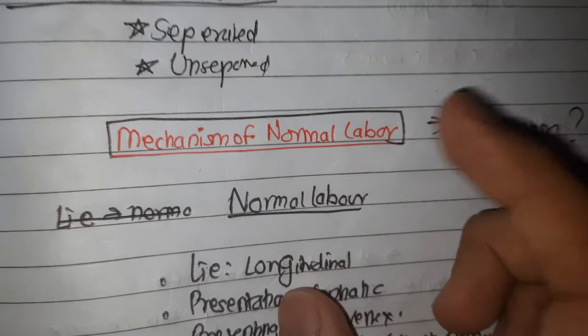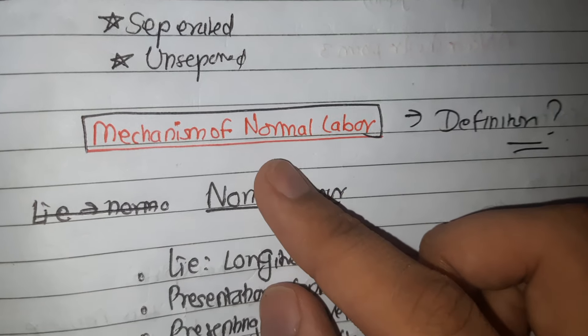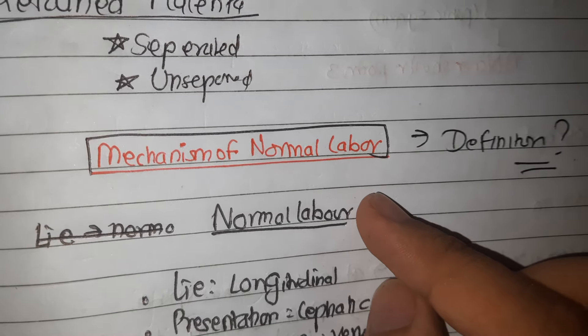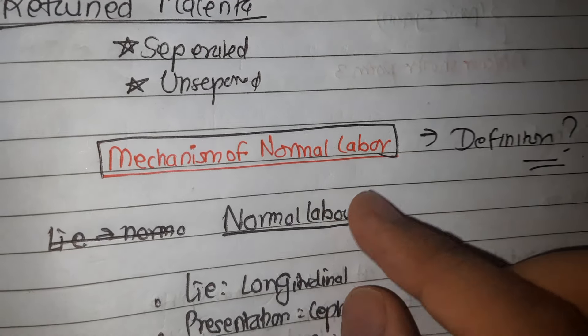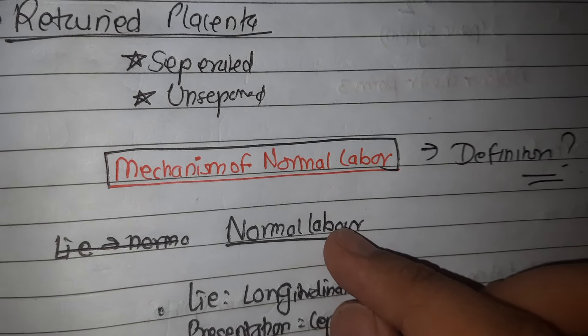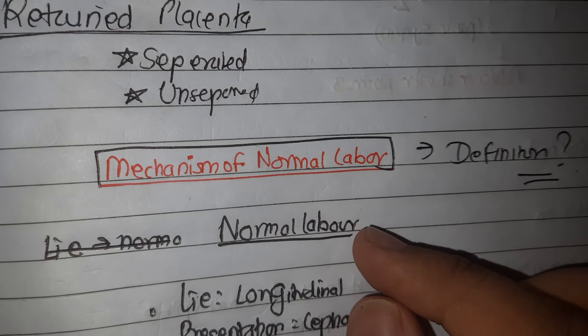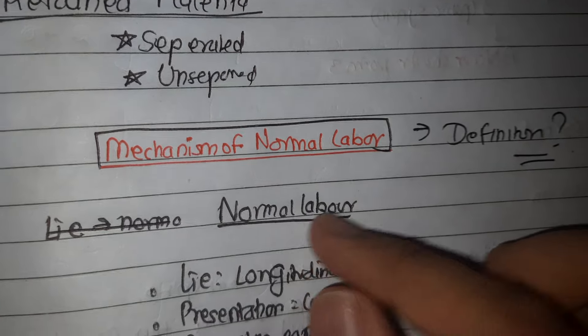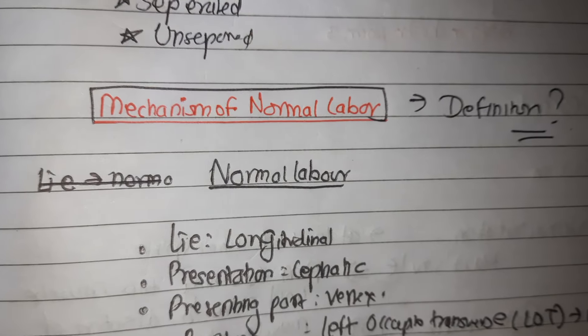The series of movements that occur on the head of the fetus in the process of adaptation during its journey through the pelvis is called the mechanism of labor. It should be borne in mind that while the principal movements are taking place in the head, the rest of the fetal trunk is also involved, either passively participating or initiating the movement. The normal fetus has a longitudinal lie, cephalic presentation, vertex presenting part, left occipital transverse position — the most common — and the denominator is the occiput.